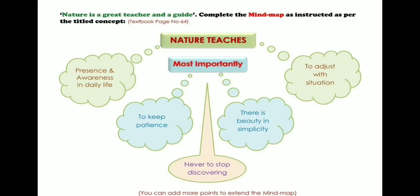Now let's see another example of mind mapping which is there in your English class textbook on page number 64. The question is: nature is a great teacher and a guide. This is the topic. The question is complete the mind map as instructed as per the titled concepts. So first, we have taken nature is a great teacher and a guide as the main concept. What does nature teach? We have two branches: first idea is presence and awareness in daily life, and nature teaches us to adjust with situation. Then most importantly, one is to keep patience, and second is there is beauty in simplicity. And the third concept is never to stop discovering.